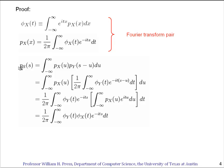Now here's the proof. The probability distribution of s as a function of s is the convolution as we explained on the previous page. Now for p_y of this argument, let's just substitute the inverse Fourier formula here.